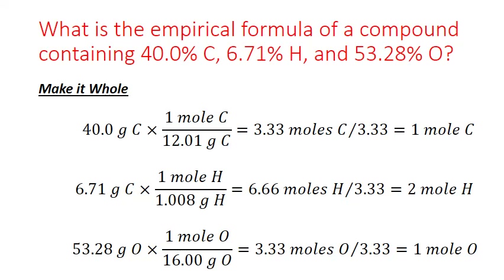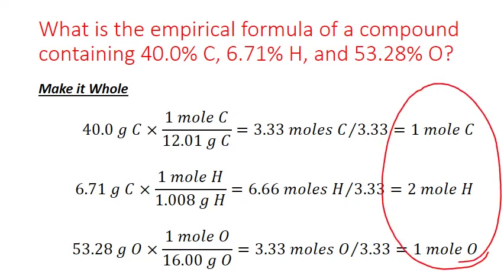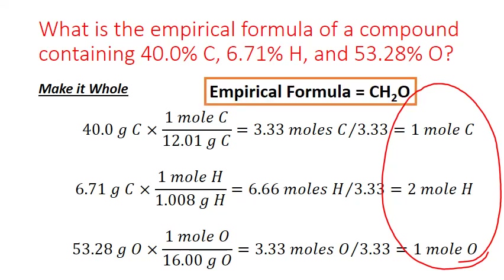The last step is to make it whole. If the numbers for each element after dividing by the least are not whole numbers, we figure out which integer to multiply all of them by to get the lowest whole number ratio. In this particular example, they already are whole numbers, so we don't have to do anything else. We use each whole number as the subscript in our empirical formula. The final empirical formula for this compound is CH2O.